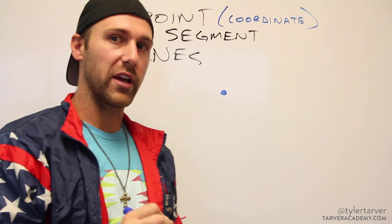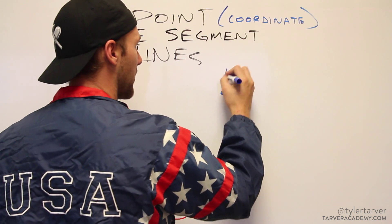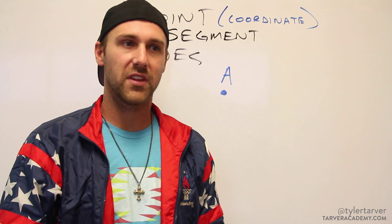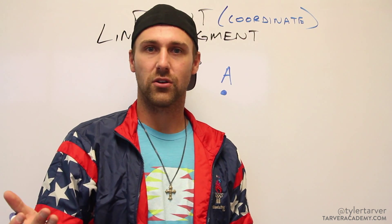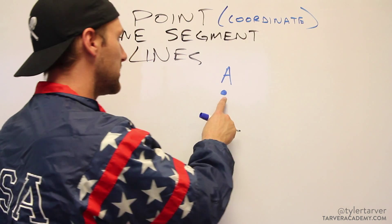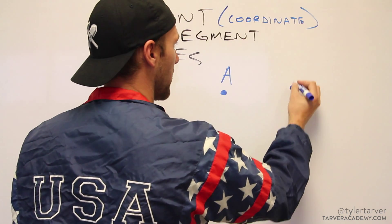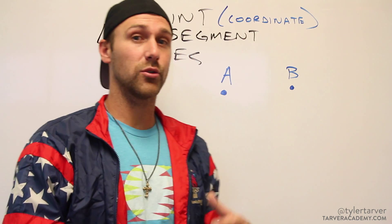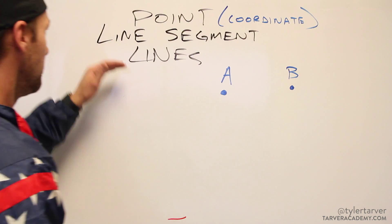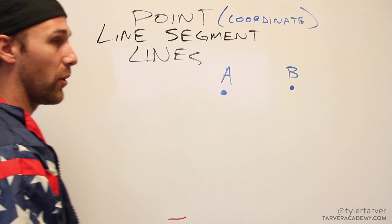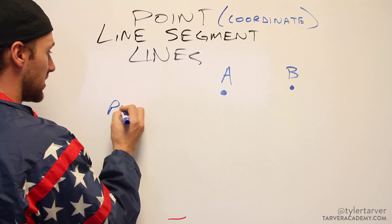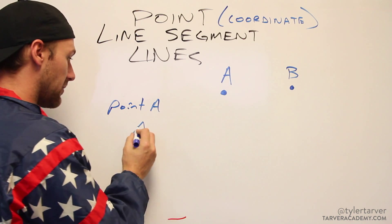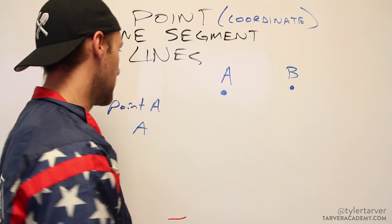Whenever we label points, we label points with a capital letter. Usually you start at A and work your way down — it's really up to you and whatever it is that you're looking at. So if we would say point A or point B, those are coordinates, also called points. Whenever you're writing a point, you would always just say point A, located at A.